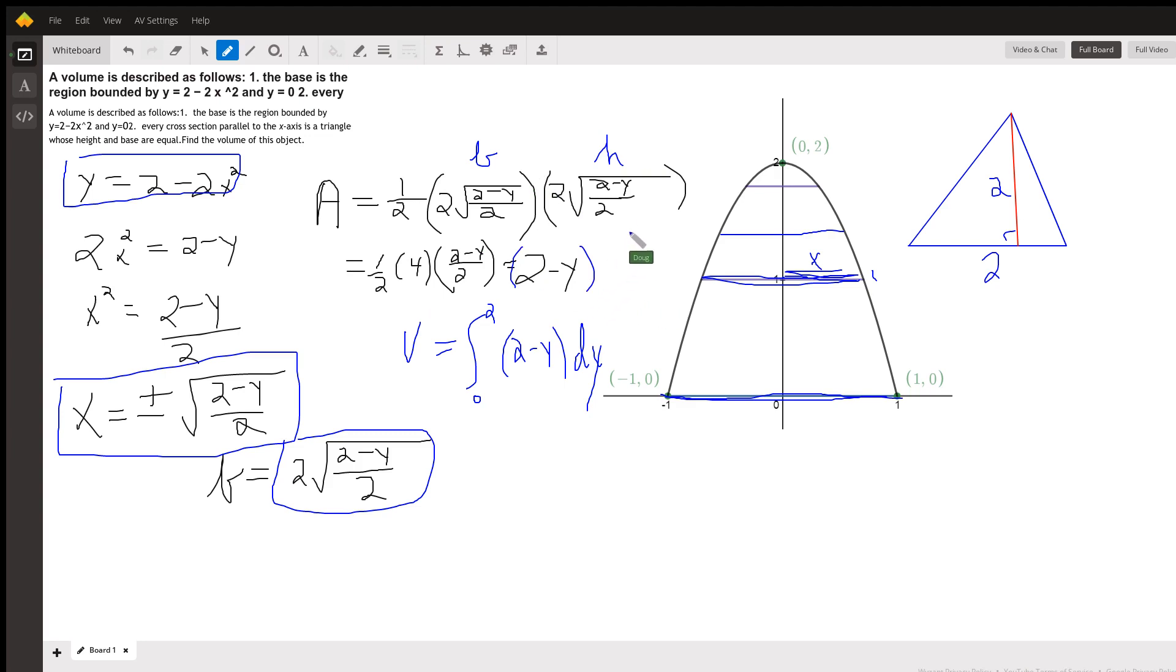2 minus y. So that is the formula for the area of each triangle depending upon where we are along the y-axis.